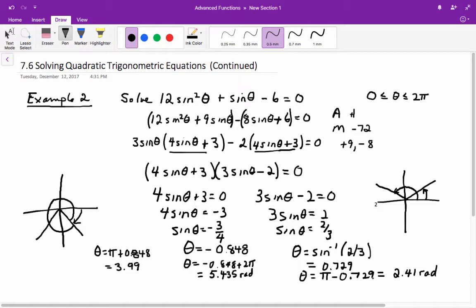So your answers are 0.729, 2.41, 3.99, and 5.44 approximately.